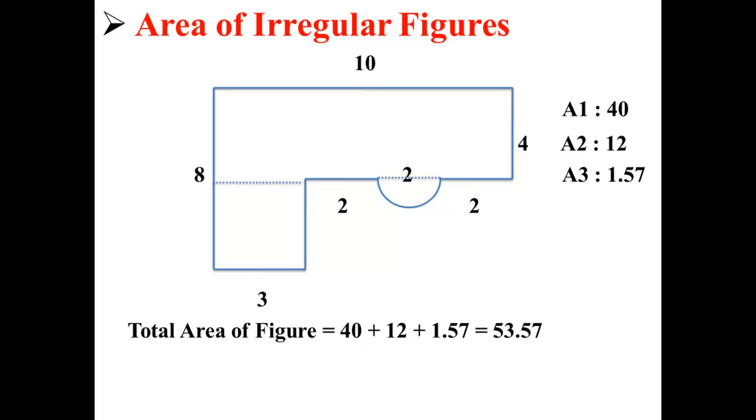Now we can find the total area by adding those three areas together. Our total area is equal to 40 plus 12 plus 1.57 for a sum of 53.57. And now we've found the sum of our irregular figure.